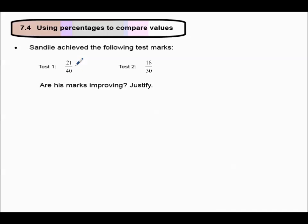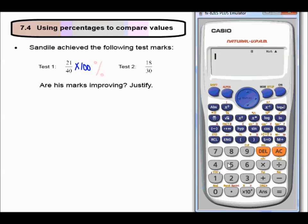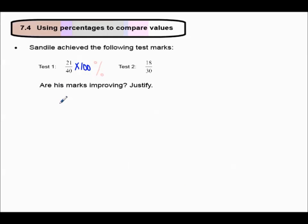How do we change to a percentage? We multiply by 100%. So 21 out of 40, multiplied by 100, equaled 52.5. So his test mark was 52.5% for test 1.